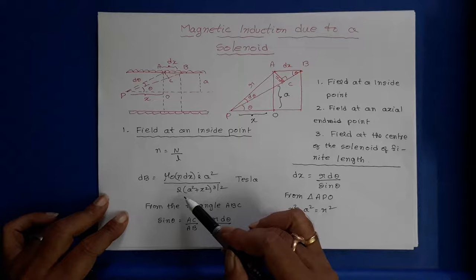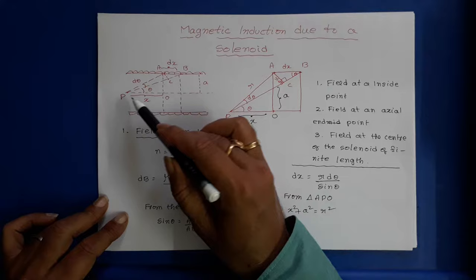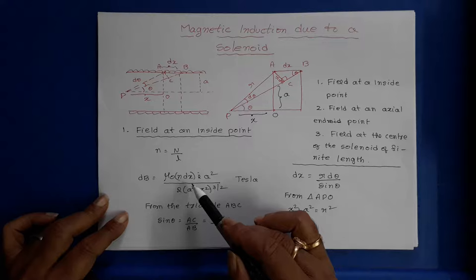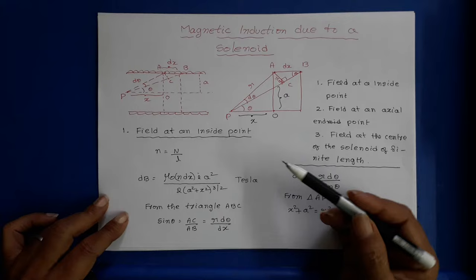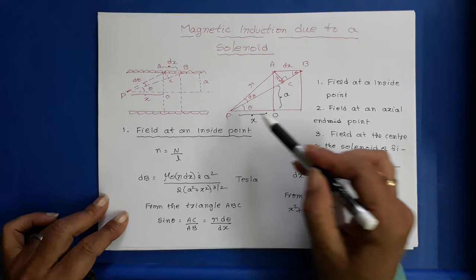dB is equal to μ₀·n·dx·I·a² divided by 2 times (a² + x²)^(3/2) tesla, where a is the radius of the solenoid and x is the distance of point P from the coil we have imagined.